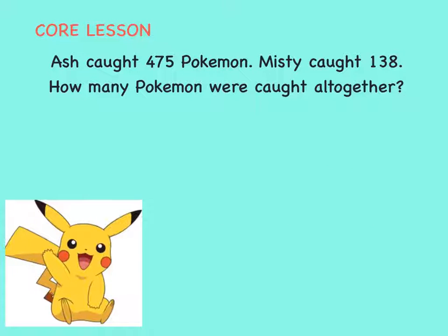Ash caught 475 Pokémon. Misty caught 138. How many Pokémon were caught all together?